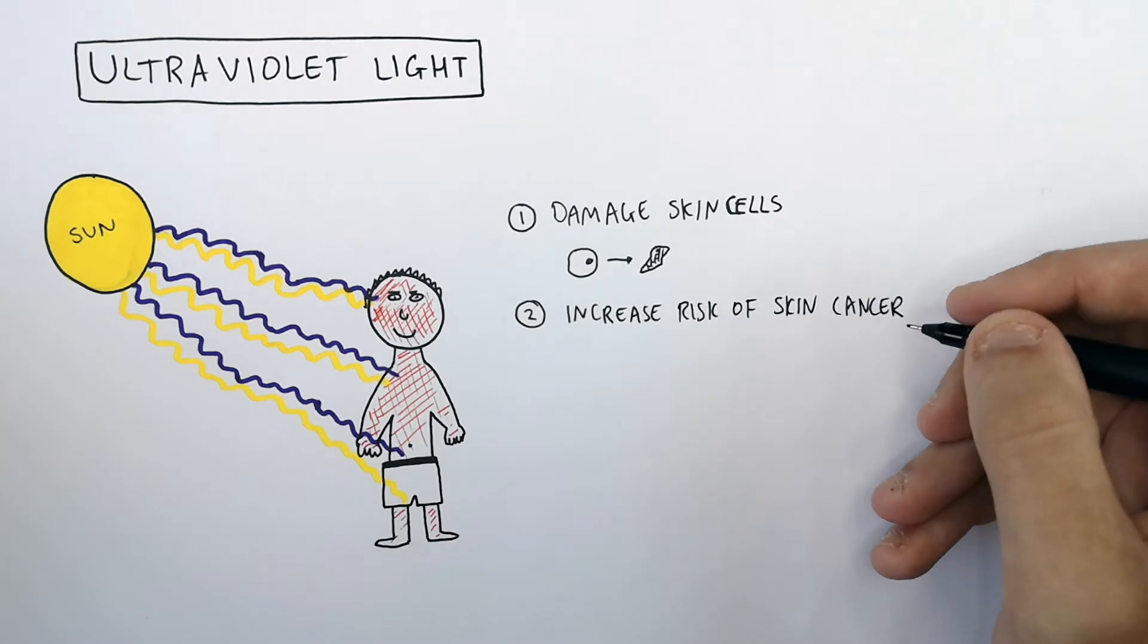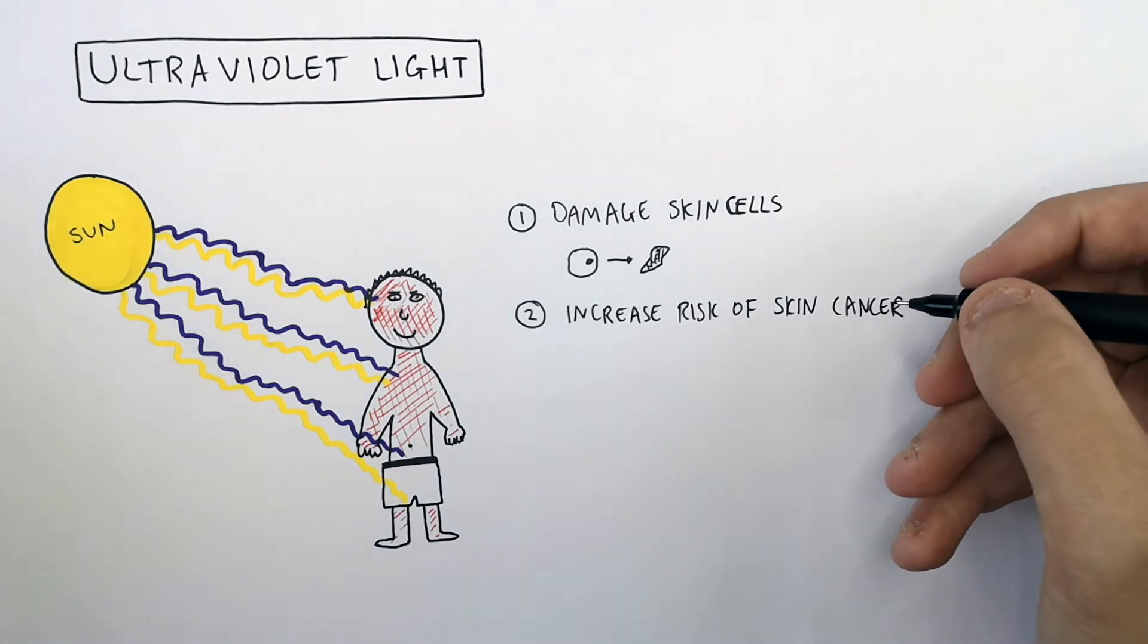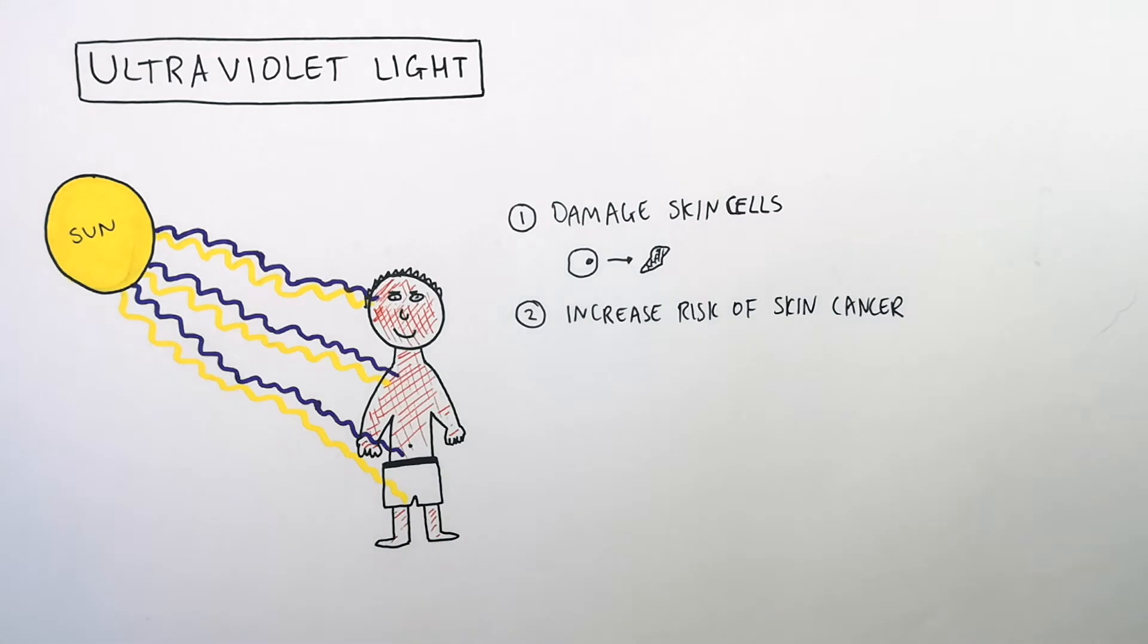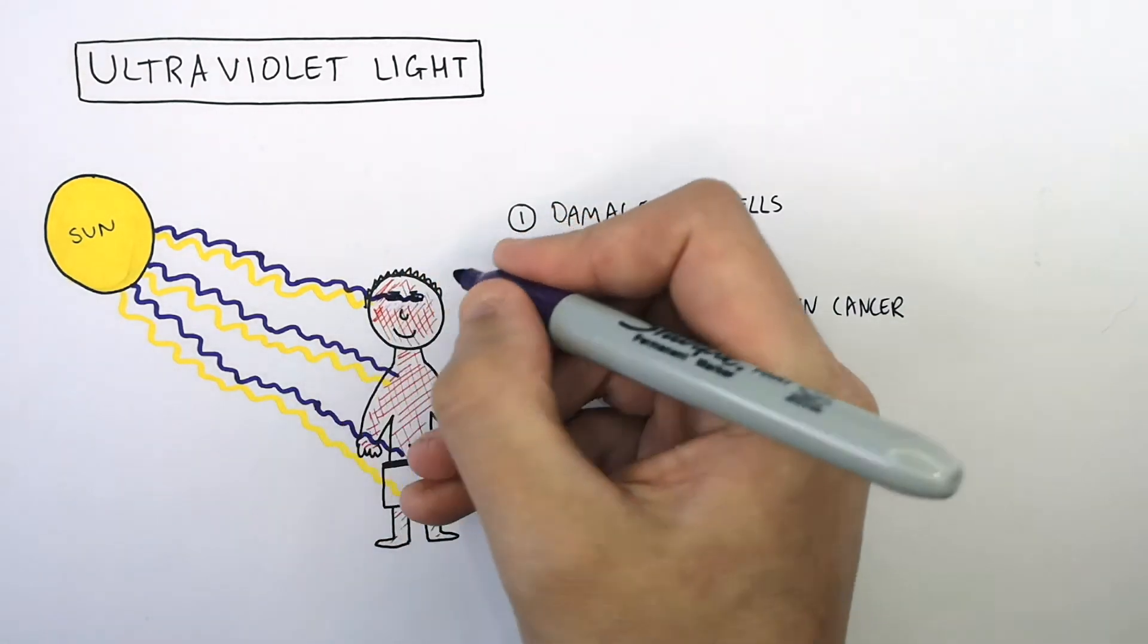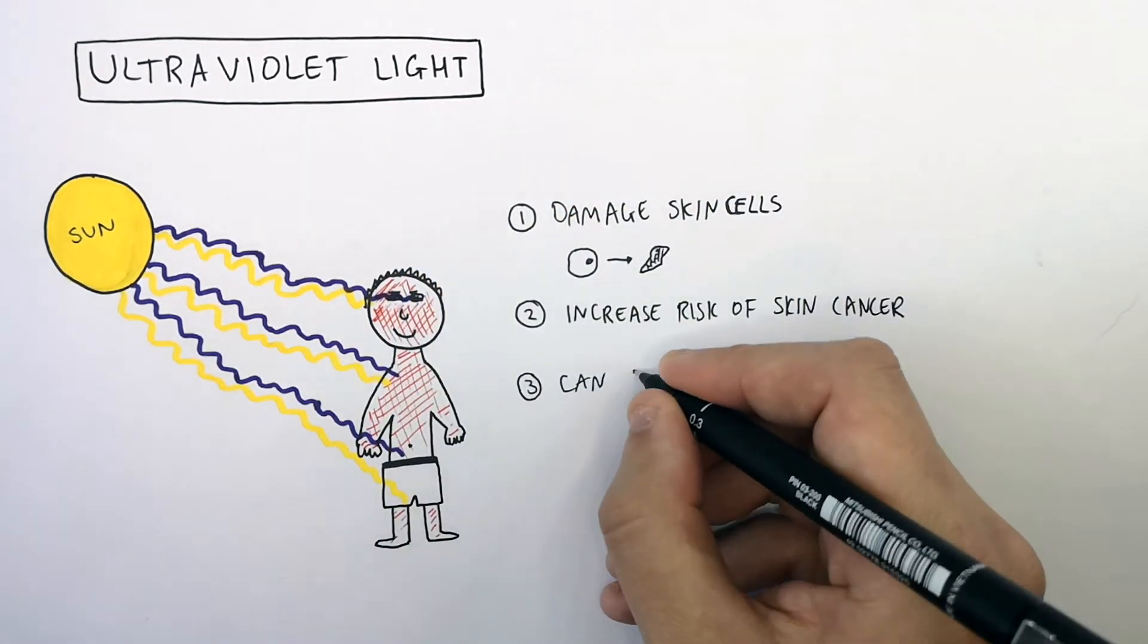This is because ultraviolet light is ionizing radiation. And UV radiation can cause blindness.